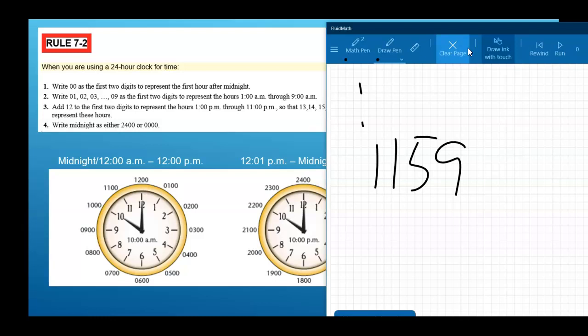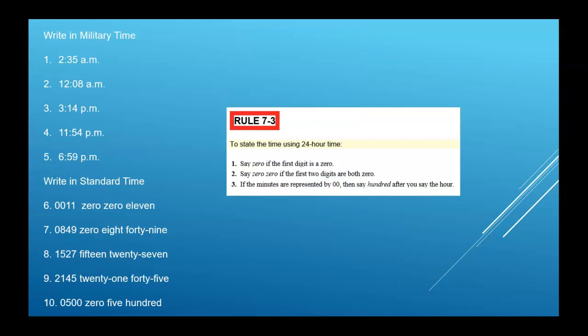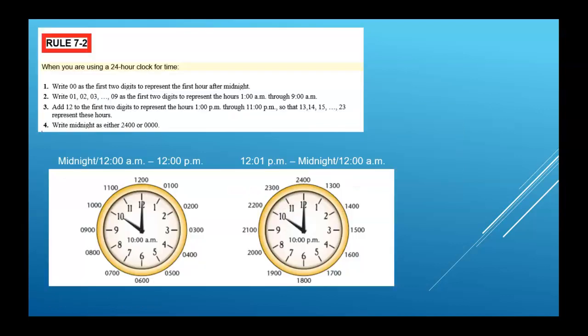As soon as you hit noon, so you go from 0100 to 1200. 1200 is noon. Once you hit noon, the next hour, which would be 1 p.m., becomes 1300. So you go from 0100 to noon, then you jump to 1300, 1400, 1500, 1600. So 1800 is 6 p.m., 1900 is 7. 2300 hours is 11 p.m.